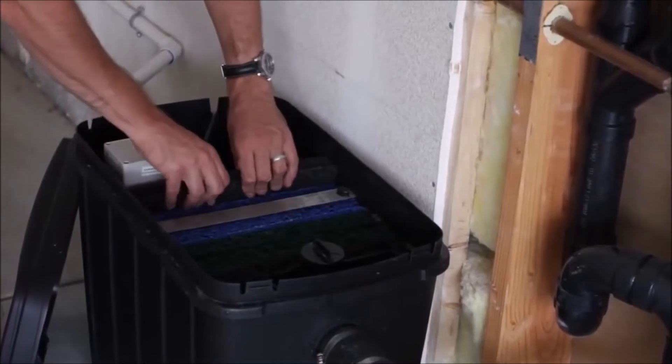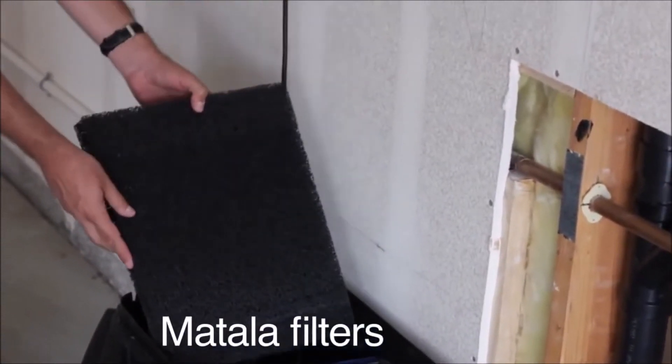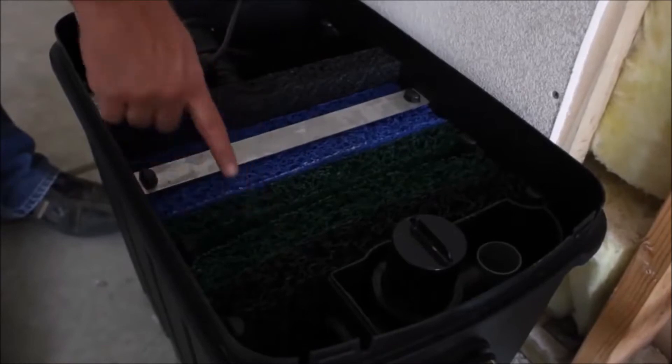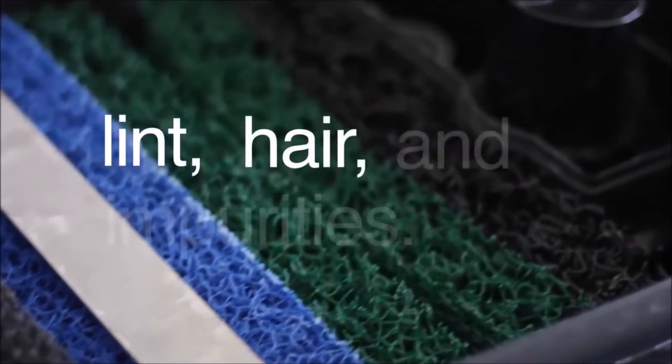At the heart of this system are the progressive Matala filters. The Aqua2Use contains six layers of filtration to intercept all lint, hair, and impurities.